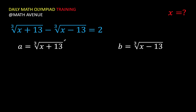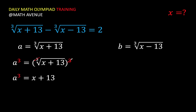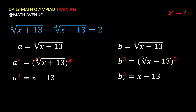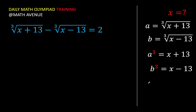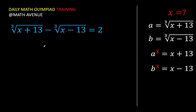Let's simplify. Raise both sides of the first equation to the third power — the index 3 and exponent 3 cancel, giving us a cubed equals x plus 13. For the second equation, we also raise both sides to the third power, giving b cubed equals x minus 13. And we can now represent the given equation as a minus b equals 2.